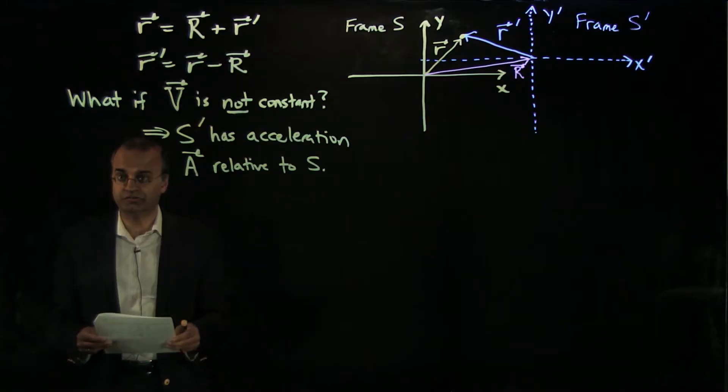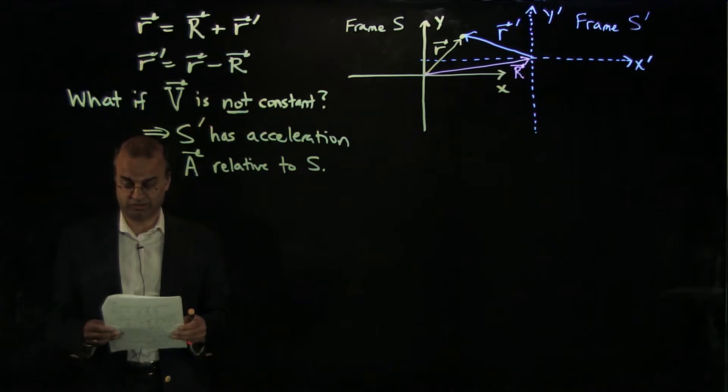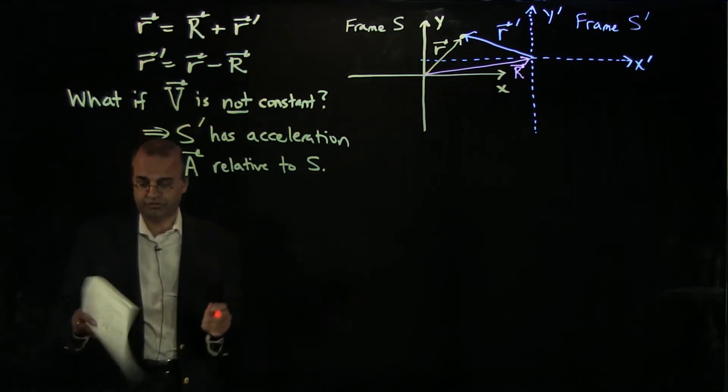Now we saw that in inertial frames, one always measures the same acceleration for the same object, even though you'll measure different velocities and different positions in general. That's not going to be true in a non-inertial frame.